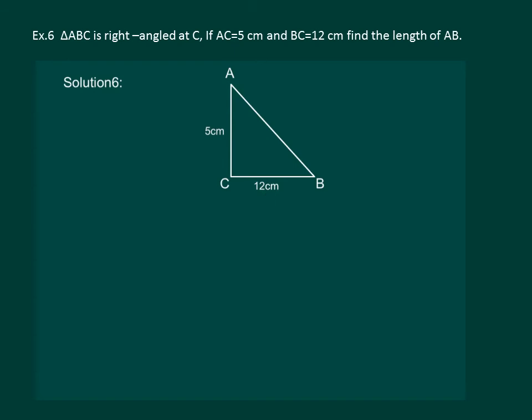By Pythagoras theorem, we know that AB square equal to AC square plus BC square. Let us substitute the values, AC equal to 5 cm, so 5 square, BC is 12, so 12 square.